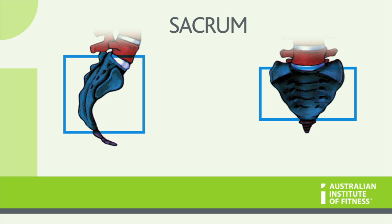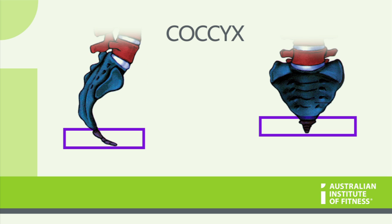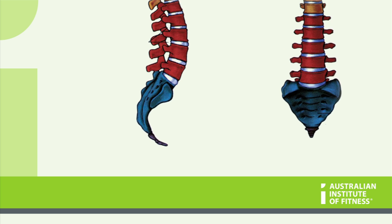The lower section has five fused vertebrae and is called the sacrum. The next section is called the coccyx, which contains four fused vertebrae, and you may know this as being called the tailbone. The sacrum and coccyx have a kyphotic curve, just like the thoracic spine.